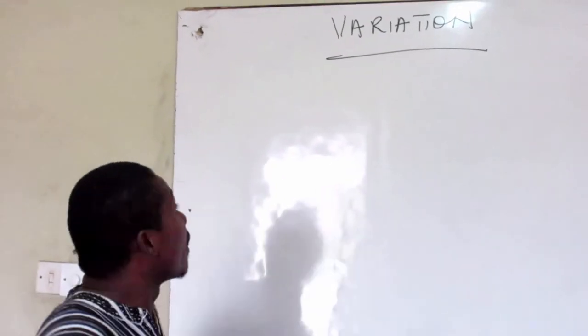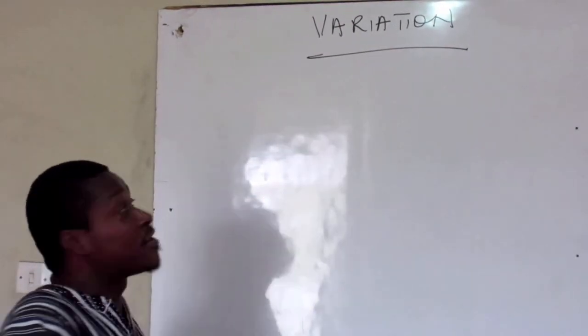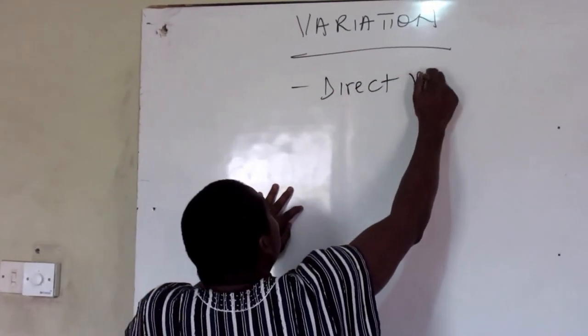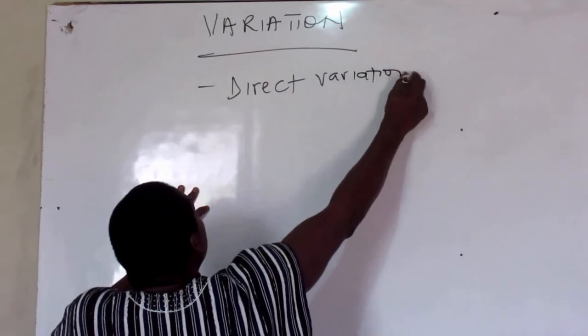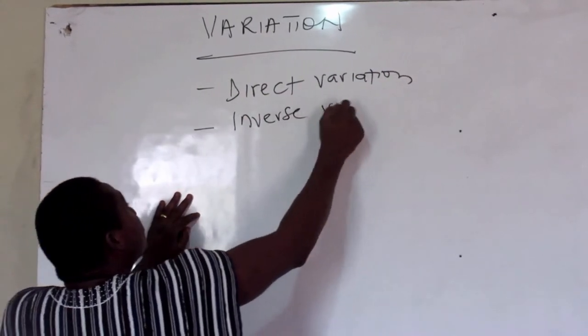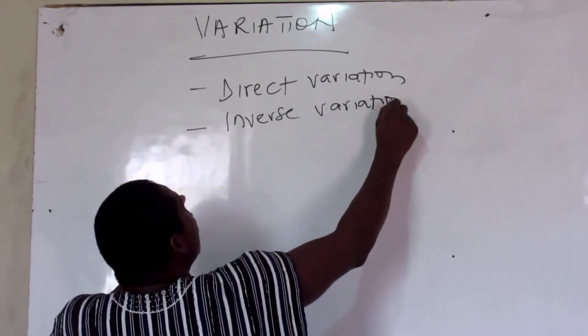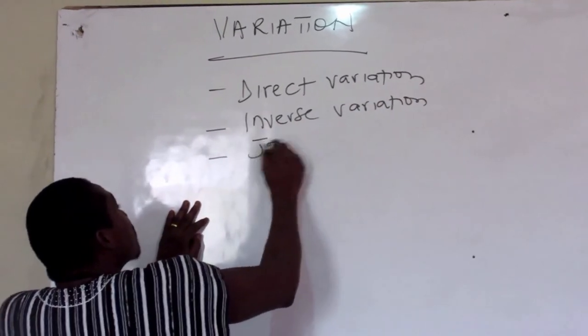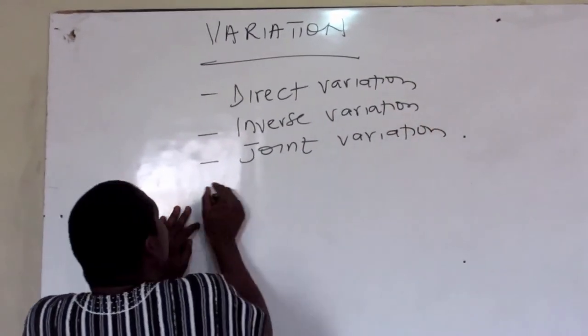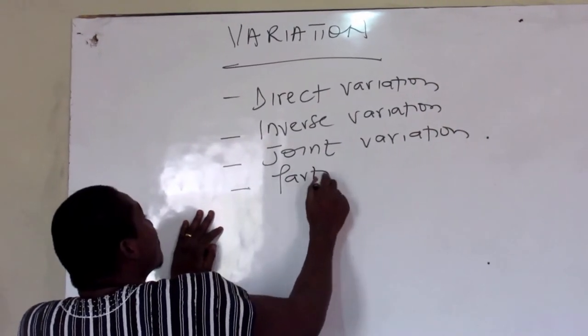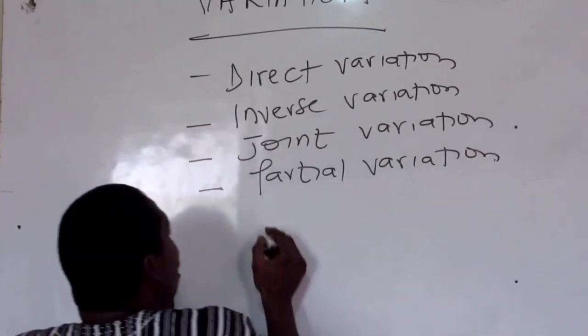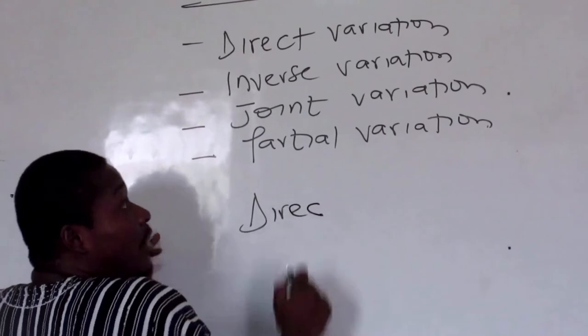I'm looking at four aspects here: we have direct variation, we have inverse variation, we have joint variation, and partial variation. These are the four aspects of the variation that we are going to look at.